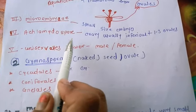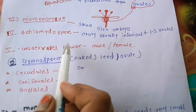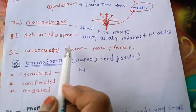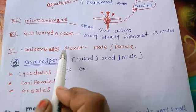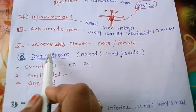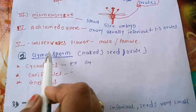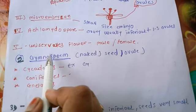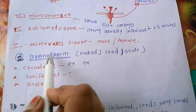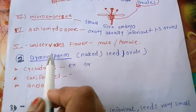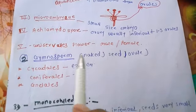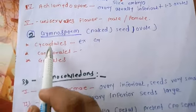The third series is microembryae, where micro means small — the embryo is very small and observed under a microscope. The fourth is achlamydosporeae, where the ovary is usually inferior with one, two, or three ovules present. The fifth is unisexual plants — uni means single sex — either male or female, only one type present.